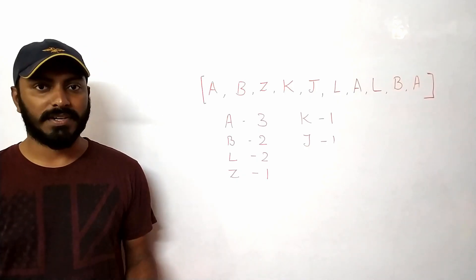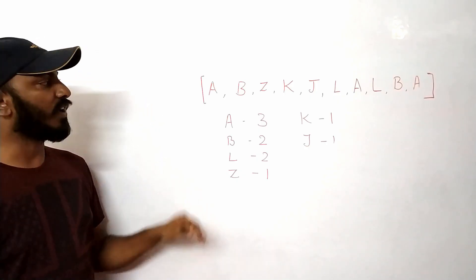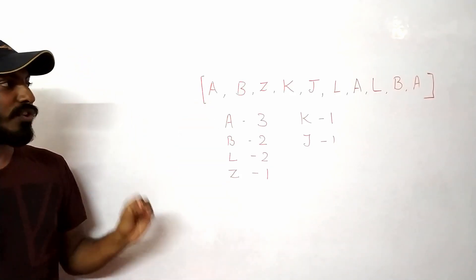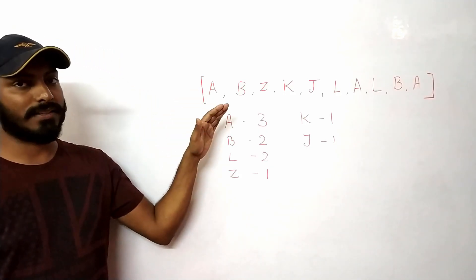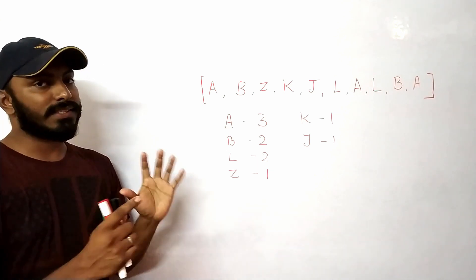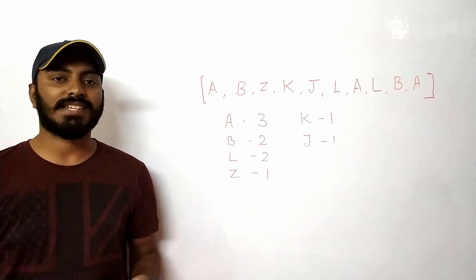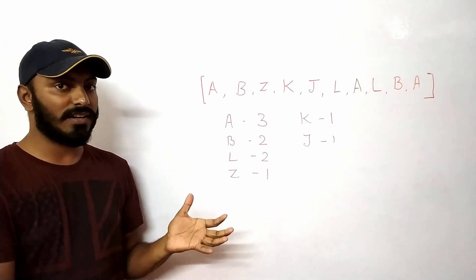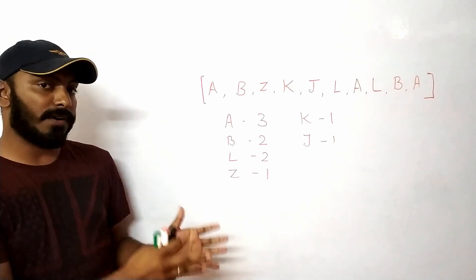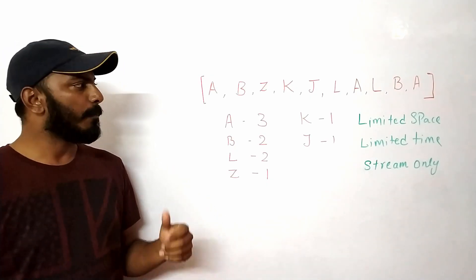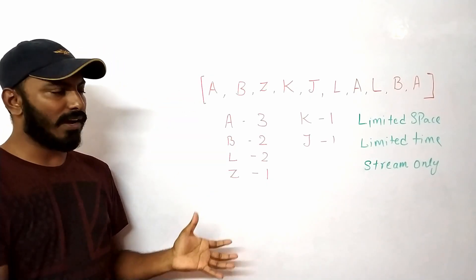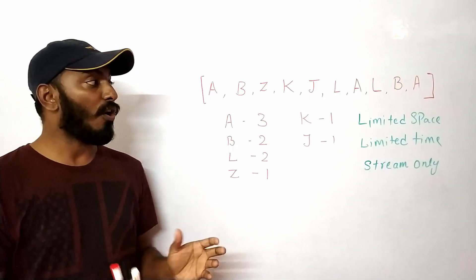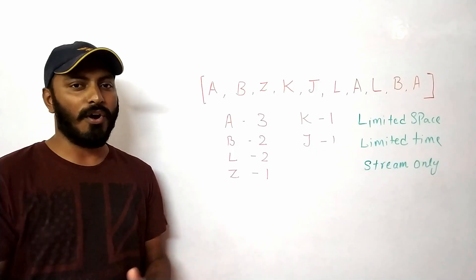Let's go to the actual problem statement. Suppose we have a stream of words — for simplicity I'm taking letters. We need to count the frequency of these letters with sublinear space and constant time. Along with that, we also need to provide range queries, total count, and sometimes percentile. We could store all this data and run queries in O(n) time and O(n) space.